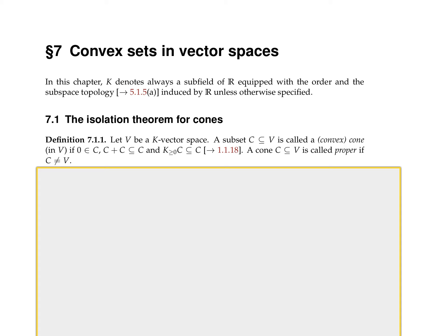A cone is called proper if it is not the whole space — exactly as you would call a subspace proper if it is not the whole space.